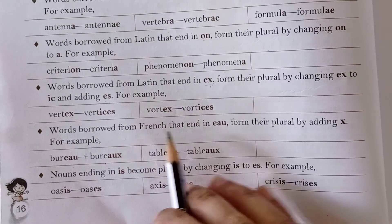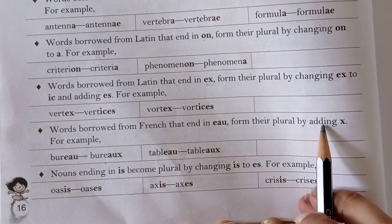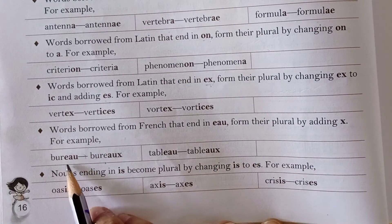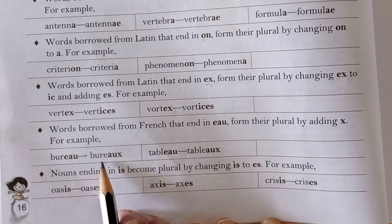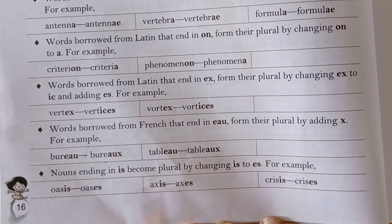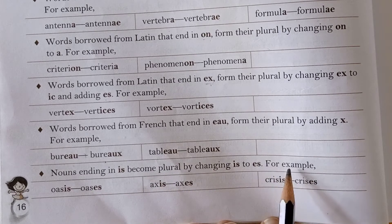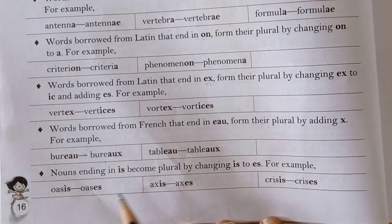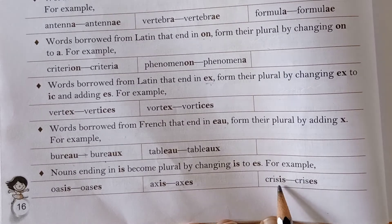Words borrowed from French that end in EAU form their plural by adding X. For example: bureau — bureaux (the pronunciation is not very different); tableau — tableaux. Nouns ending in IS become plural by changing IS to ES. For example: oasis — oases; axis — axes; crisis — crises.